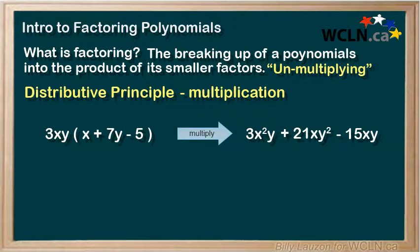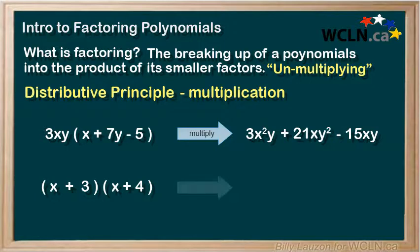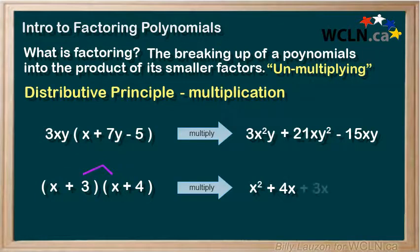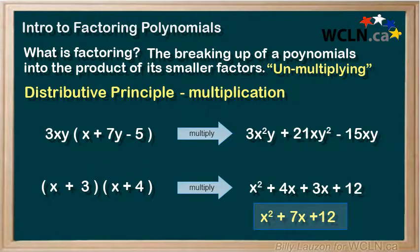We've also distributed pairs of binomials. In the example below, x times x gives us x squared. We get 4x, and we multiply the 3 by the x to get 3x, and we multiply 3 by 4 to get 12. This simplifies to a trinomial x squared plus 7x plus 12.